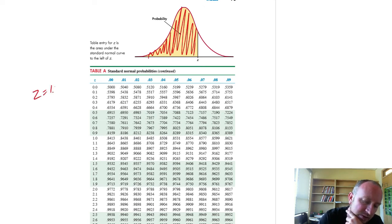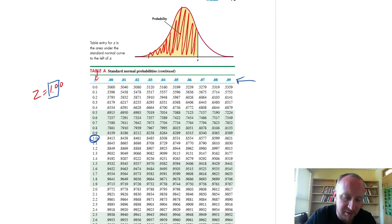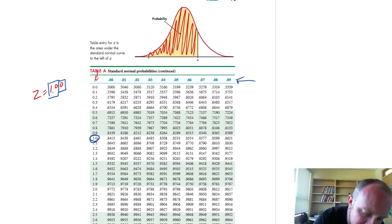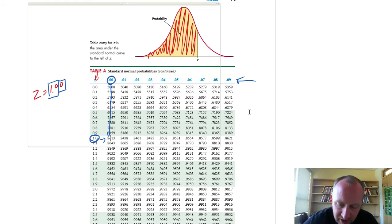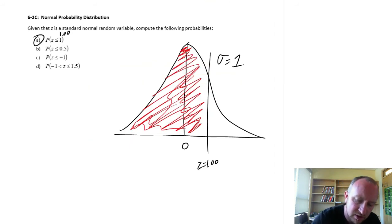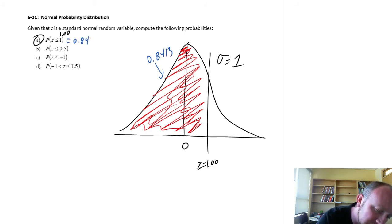So if I have a z equal to 1.00, this first column gives me the first integer and first decimal. So it gives me these two. So I'm looking for 1.0. And then this first row is the second decimal place. So then that would be here, which is zero. So that's my 1.00. I'm looking at these two values. And where they come together, that gives me the coordinates of my probability of interest. So here I'm looking at a value of 0.8413. So that means that this area under the curve is 0.8413. And that's my answer to the first problem.